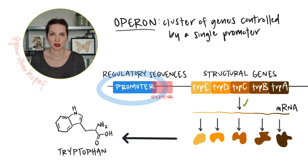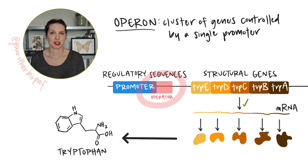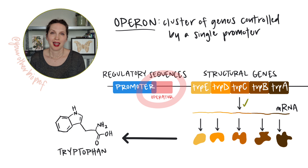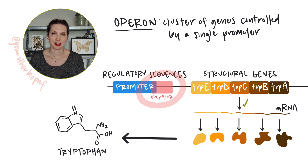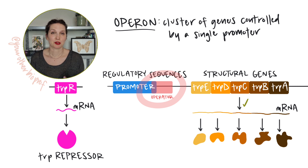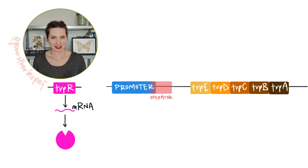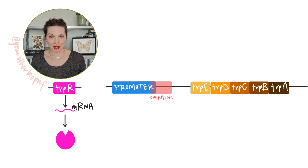Between the promoter and the structural genes, you'll find the operator, a region where a regulatory protein will bind. For the trp operon, the regulatory protein is called the trp repressor. It's produced by a separate gene that's not part of the operon. How do these proteins and DNA sequences work to control expression of the trp operon?